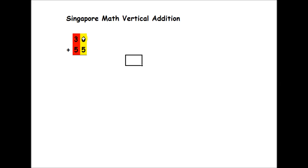So let's take a look at the first one, 6 plus 5. 6 plus 5, that gives us 11. Now, unlike the traditional method where we would bring down a 1 and carry a 1, for Singapore Math Vertical Addition you actually write the full value underneath.